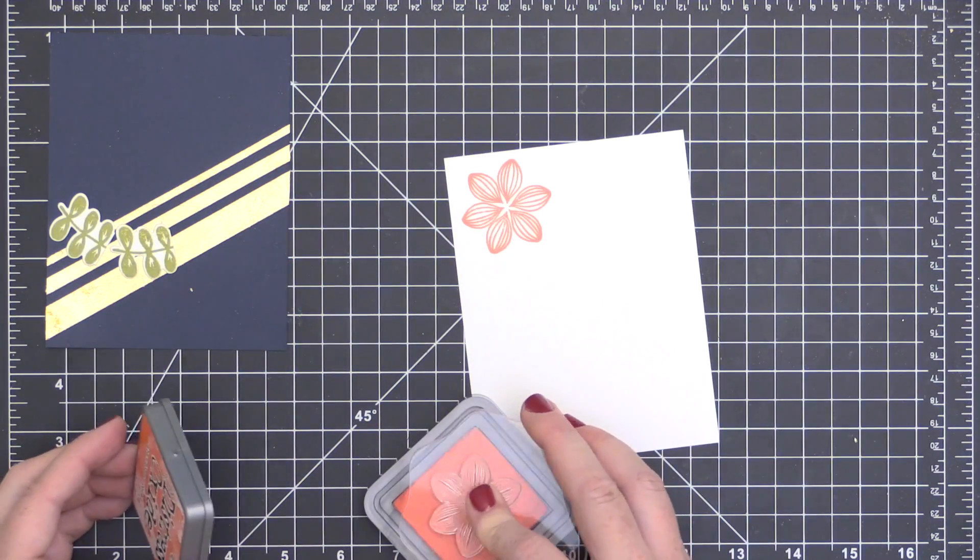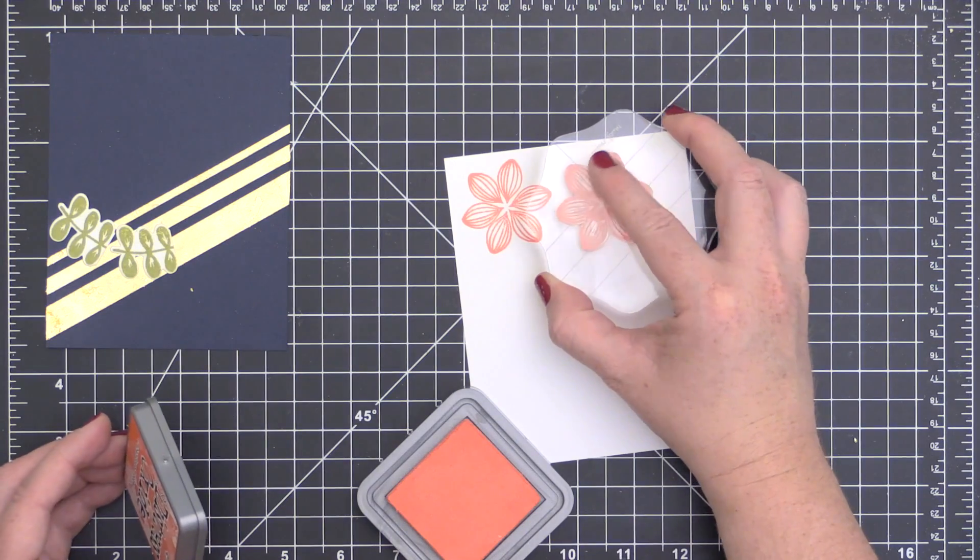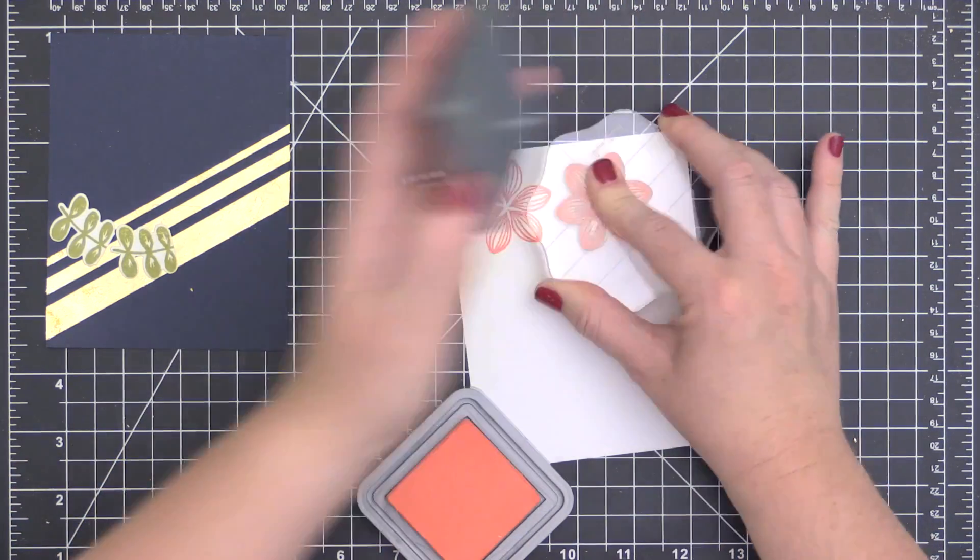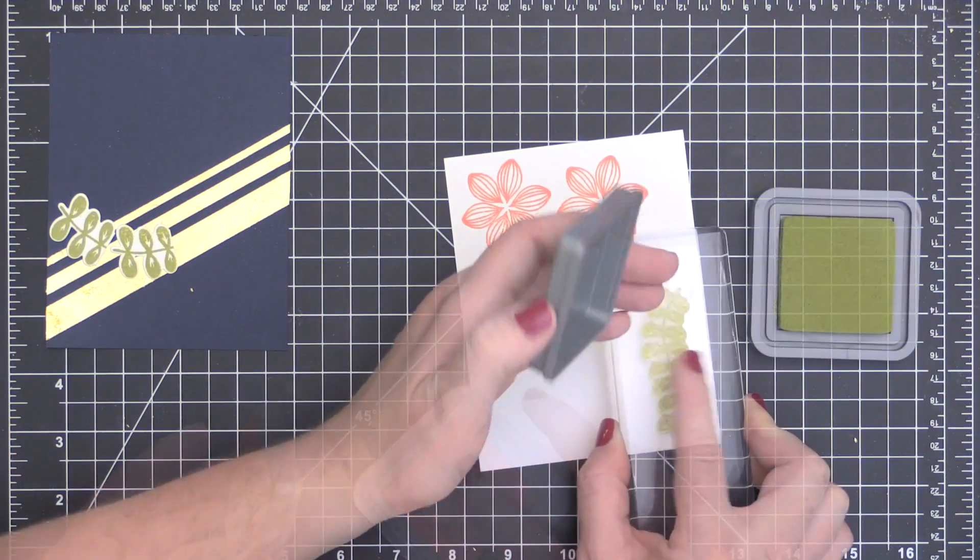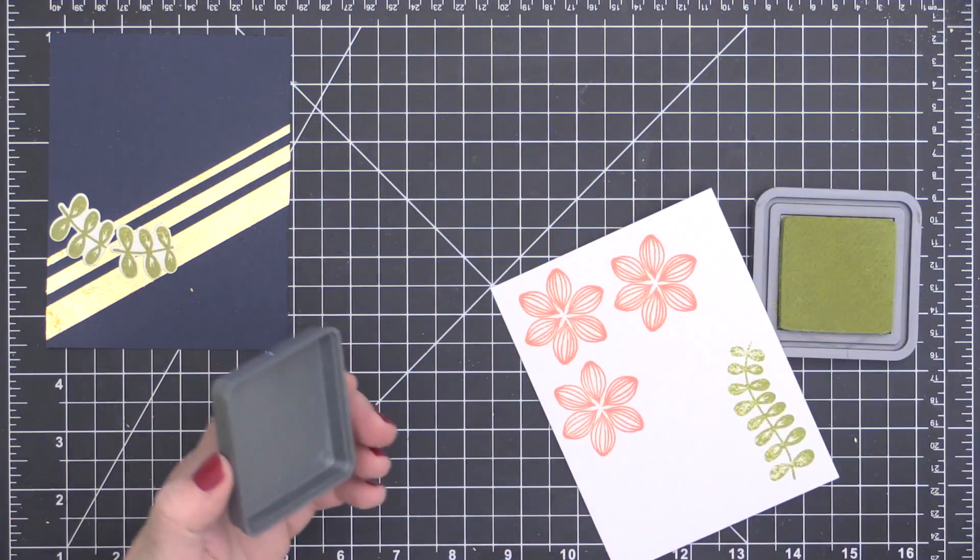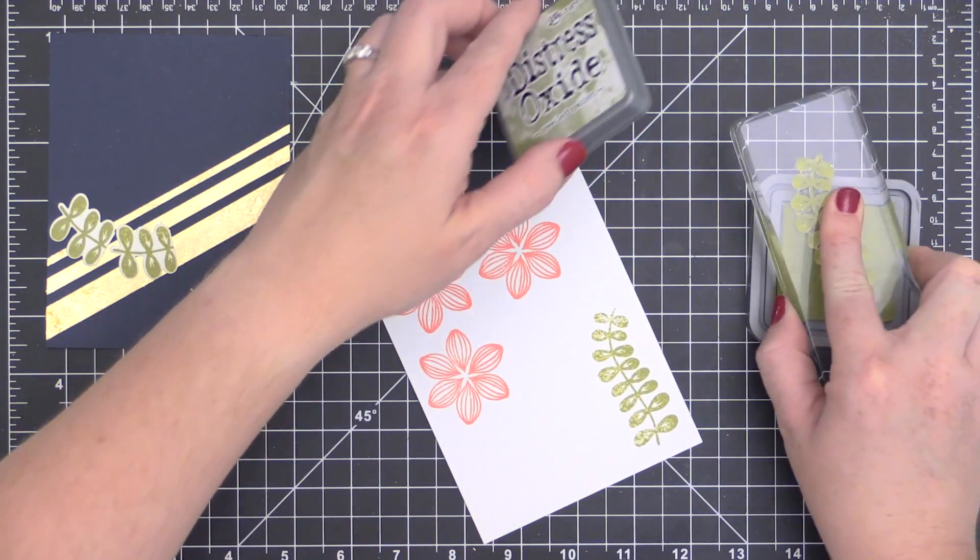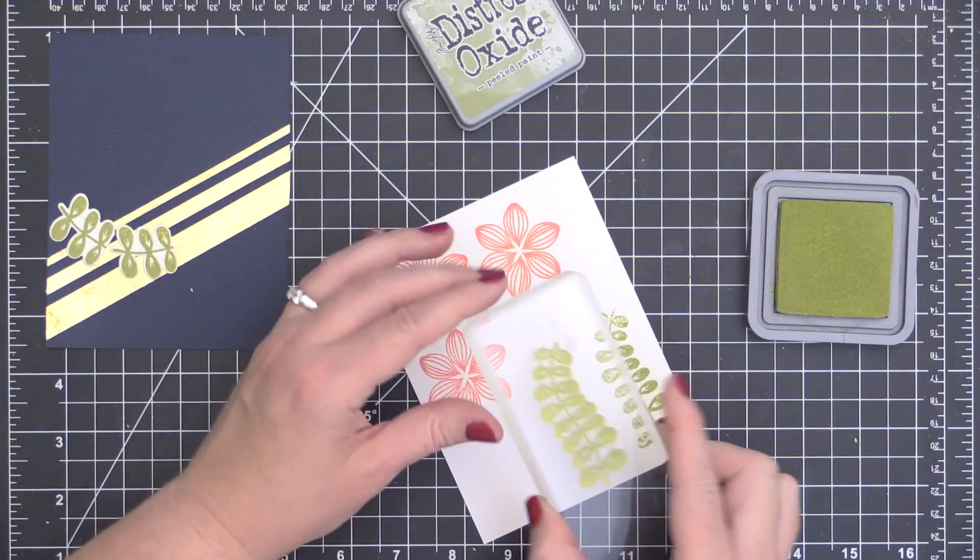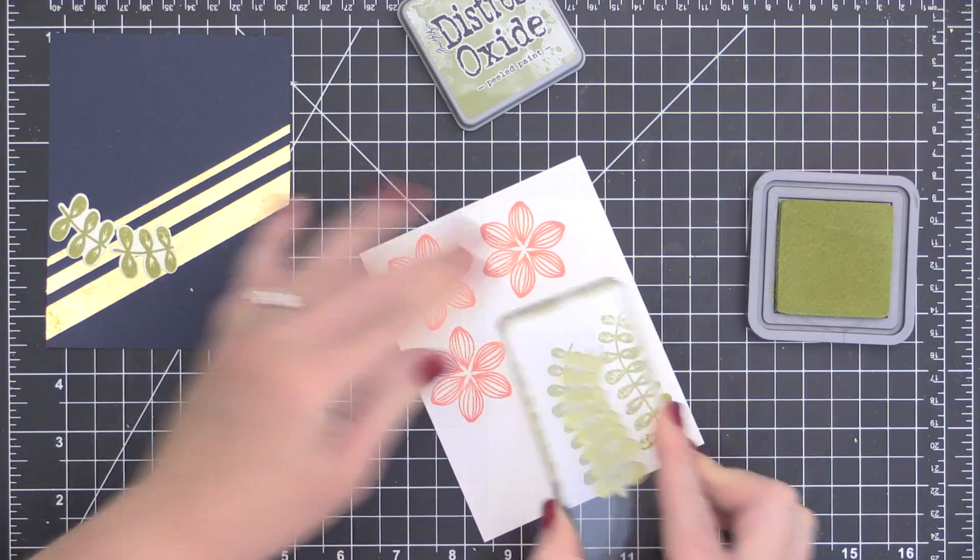I went ahead and brushed away the excess just like I did with the other. Then I'm going to stamp some images using the Distress Oxide ink once again onto some Neenah Solar White cardstock. I'm going to be die cutting these to add to this card front. The green I'm using here, by the way, is Peeled Paint.